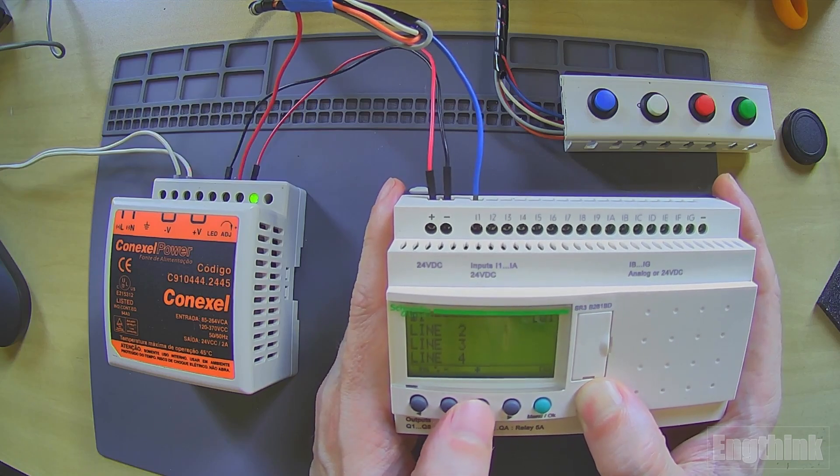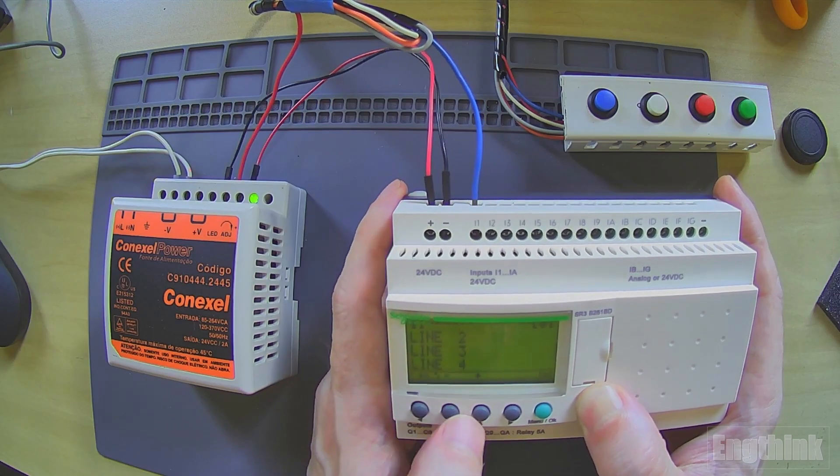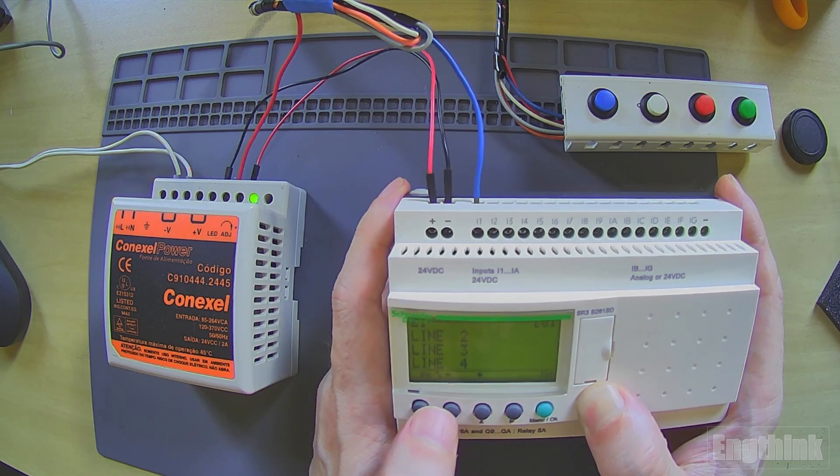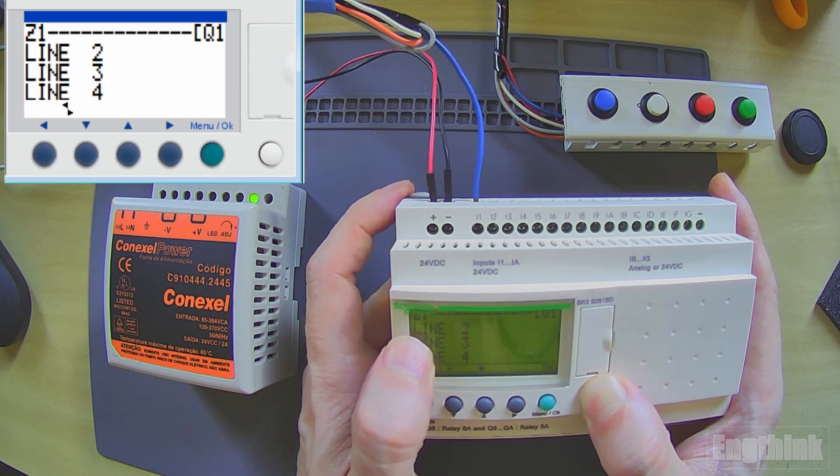Let's press minus. We have lowercase I, and then let's press again. Then we have uppercase Z.